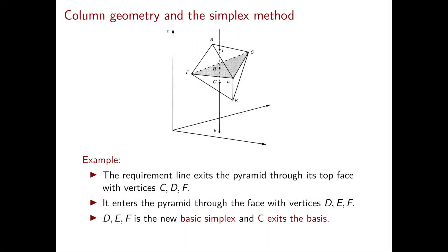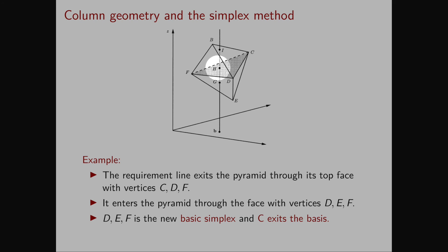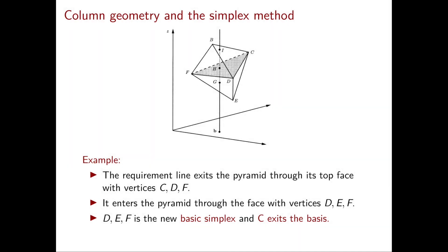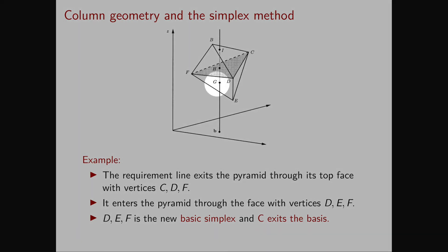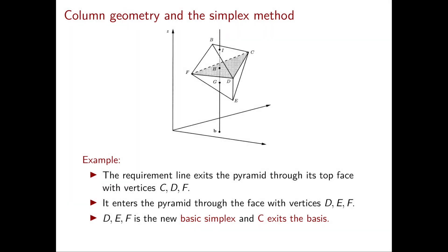Looking closely at our example: the requirement line exits the pyramid through the top face with vertices c, d, f, and it enters the pyramid through the face with vertices d, e, f. So d, e, f is the new basic simplex and c should exit the basis. We choose the exiting variable this way because choosing a face that doesn't intersect the requirement line would yield a basic solution that is not feasible.